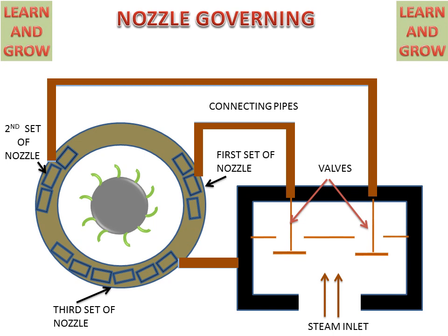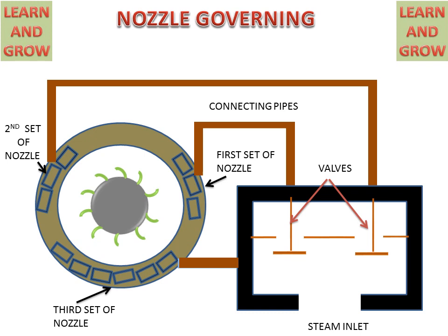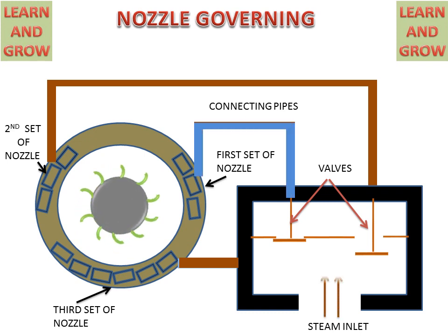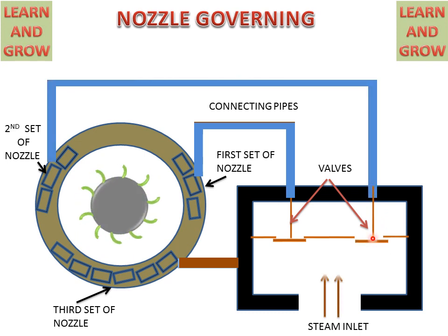In the case of load changes, we can open and close these valves according to the requirement. When steam is at the inlet, we can close this valve, and the supply of steam or water will be stopped, so steam will not go to the first set of nozzles and turbine speed can be maintained. Similarly, the second valve can also be used to stop water or steam going to the second set of nozzles. So from these sets of nozzles, we can maintain the speed of the turbine by opening and closing the valves. This is called nozzle governing.